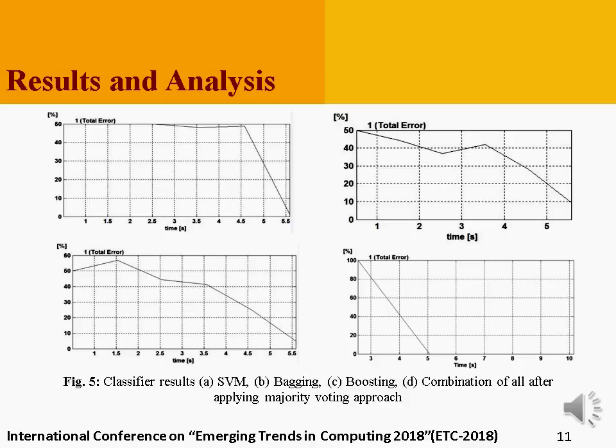The uniqueness of this proposed work is that we have different classifiers built at different time points, each with a corresponding classification error. Accordingly, we can choose which classifier gives zero or minimum error, and pick that for the majority voting technique. From here we can see that for majority voting, we have zero error after 5.5 seconds, or around after 5.1 seconds. This conclusion is shown in a comparison table in the next slide.